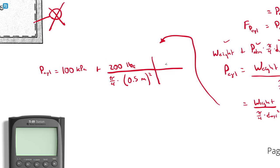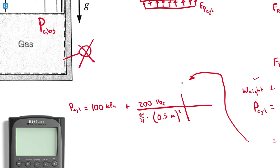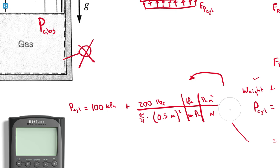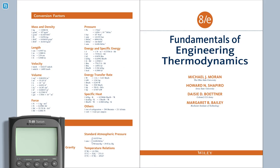So I have 100 kilopascals plus 200 pound-force divided by pi over four times 0.5 meters squared. To add these together I need to convert units. I'll convert into kilopascals since that's what the problem asks for and it makes more sense. A kilopascal is a thousand pascals, and a pascal is a newton per square meter. From there I can convert newtons into pound-force using a conversion from the textbook.